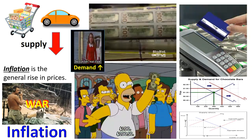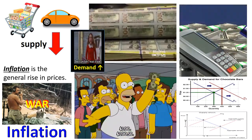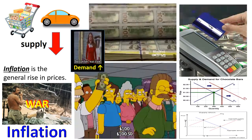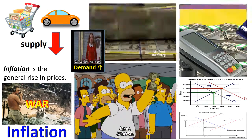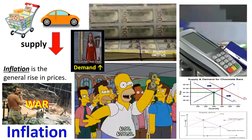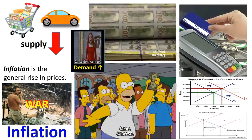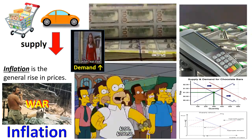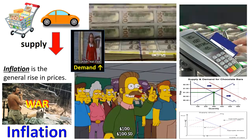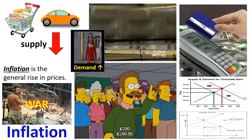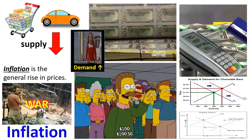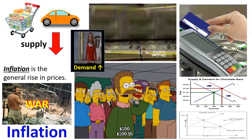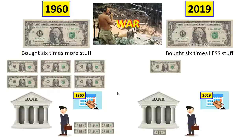You have a hundred dollars in your pocket. The government prints money, creates inflation, creates a rise in prices. Although you still have a hundred dollars, you really cannot buy what you used to. For example, a hundred dollar cell phone now costs $150 because of inflation — prices have increased. You can no longer buy the phone you used to be able to buy, because of government policy. In a sense, they have stolen your wealth.